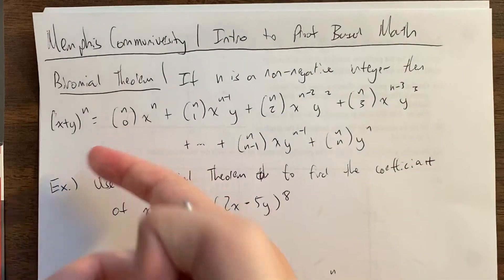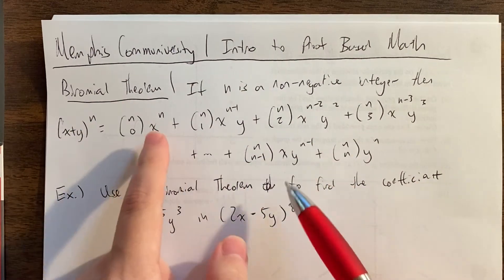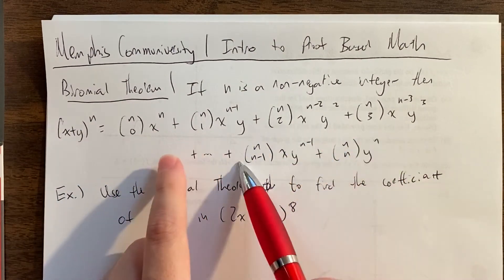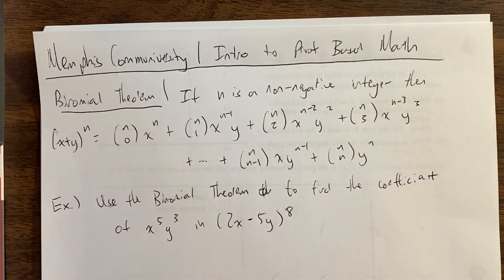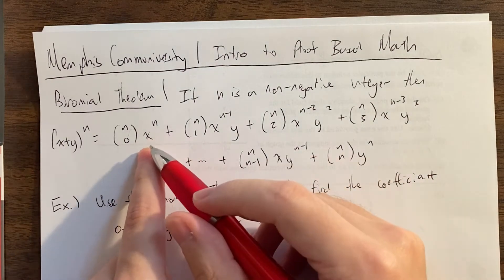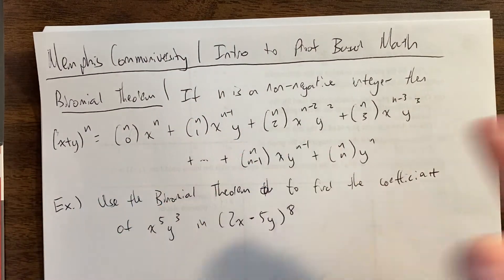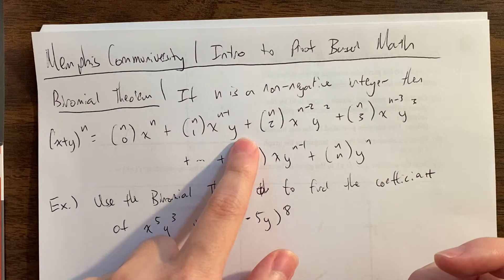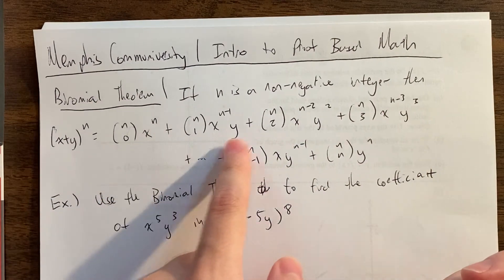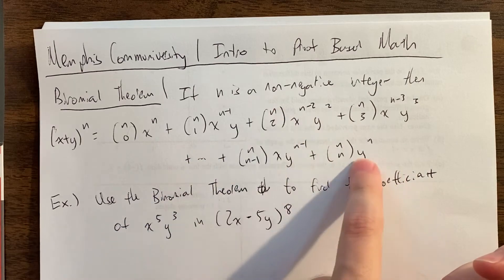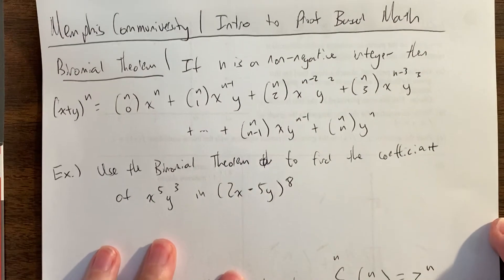What we're going to do is a common binomial theorem question, and then we'll use the binomial theorem to explore different relationships amongst the binomial coefficients. The binomial theorem says that if you want to expand (x+y) to the n, the coefficients of each term are the binomial coefficients. You'll have a term for every power of x and every power of y — the power of x decreases by 1 while the power of y increases by 1: y to the 0, y, y squared, y cubed, and so on; x to the n, x to the n minus 1, all the way down to x to the 0 times y to the n.